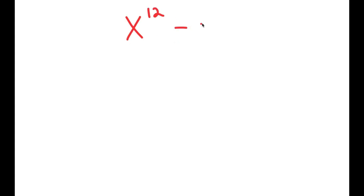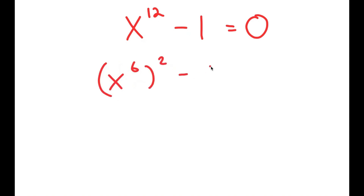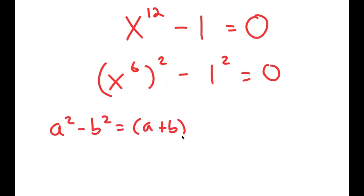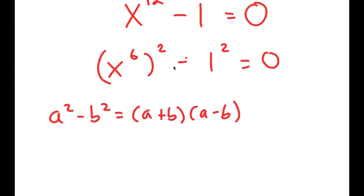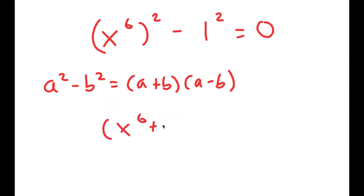In this video, I'm going to solve the equation x to the power of 12 minus 1 is equal to 0. To solve this, I'm going to first rewrite this as x to the power of 6 squared minus 1 squared is equal to 0. And the reason I'm doing this is so I can use the property a squared minus b squared is equal to a plus b times a minus b. So this turns into x to the power of 6 plus 1 times x to the power of 6 minus 1 is equal to 0.